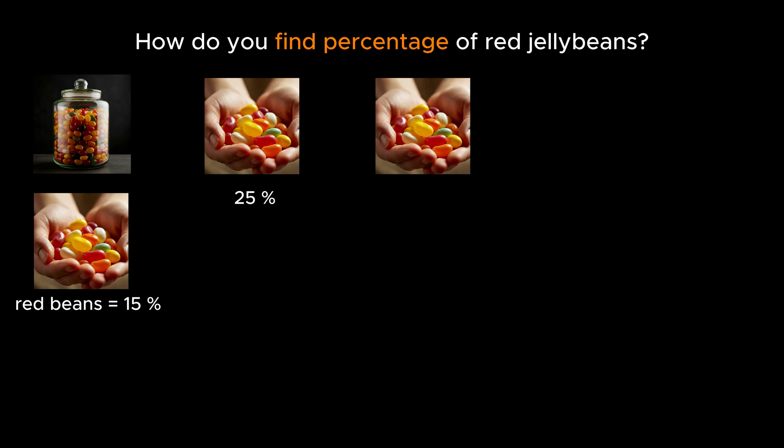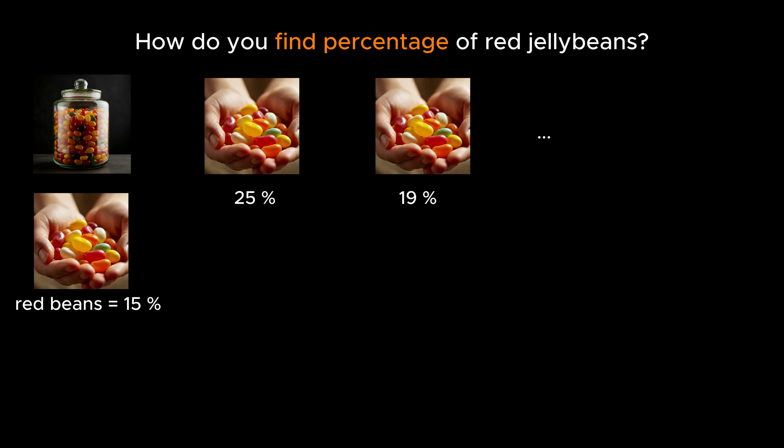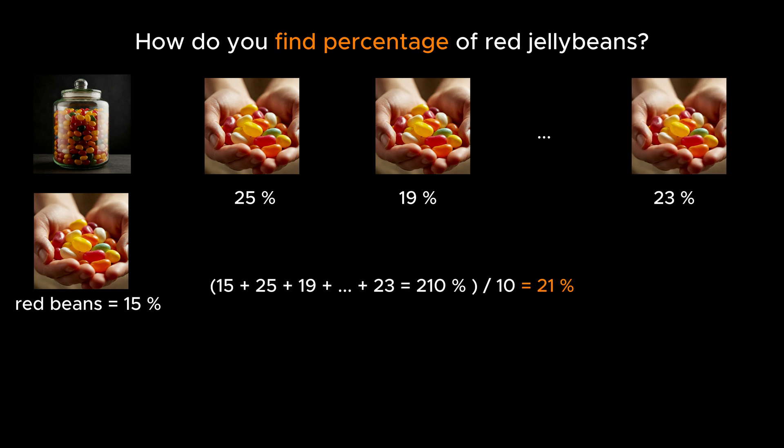Grab a handful, calculate the percentage of red jelly beans, and write it down. Do this maybe ten times. Now you have a bunch of percentages. If you add all those percentages together and divide by the number of handfuls you took, you'll get an average percentage.